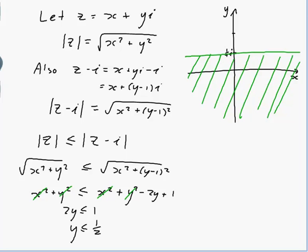So that would be it, so I should just say that the shaded area is z such that |z| ≤ |z - i|.